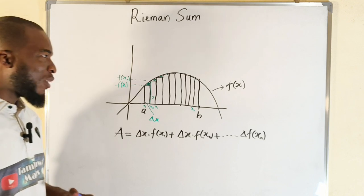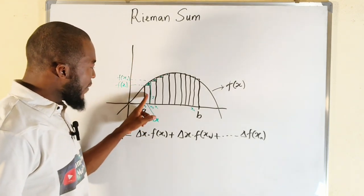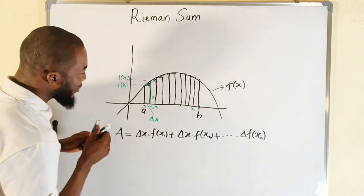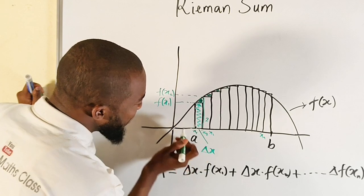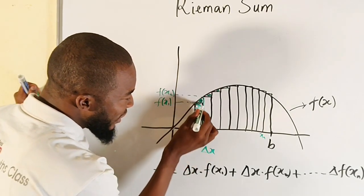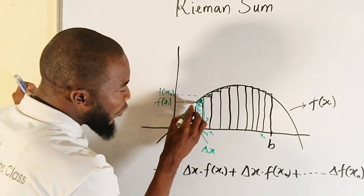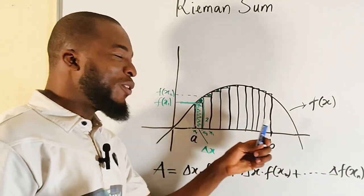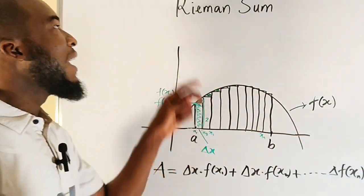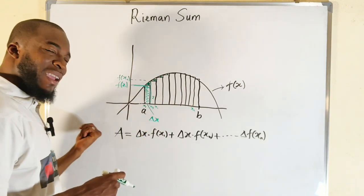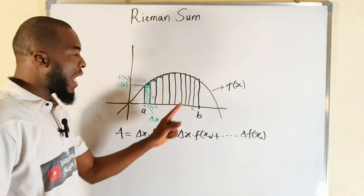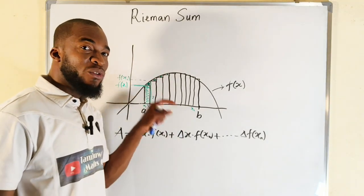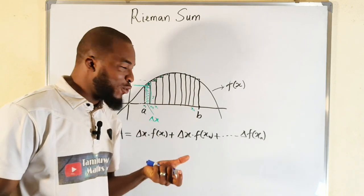There is something very important to note here. You can see that every single rectangle we have here uses its left leg as the height — it has two legs, but we use the first leg to determine its height. There are some instances where we have to use the second leg. Once you use the right leg, it is called right Riemann sum. But when you use the left leg, it is considered to be the left Riemann sum. And another thing you should know: the higher the number of rectangles you have, the closer you get to the actual area.